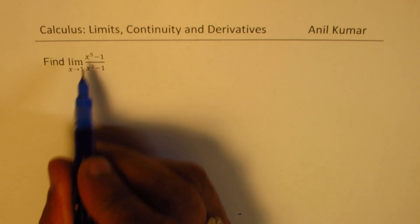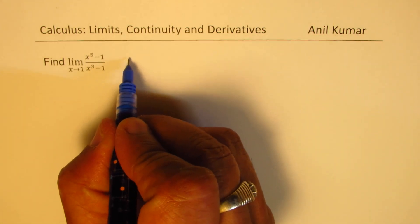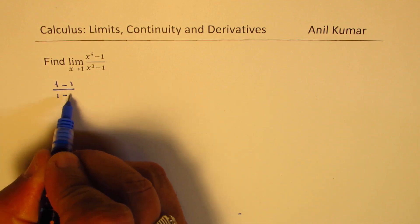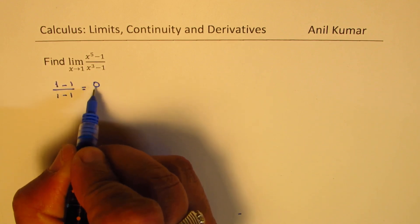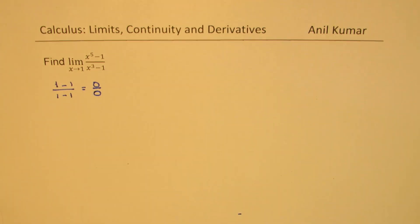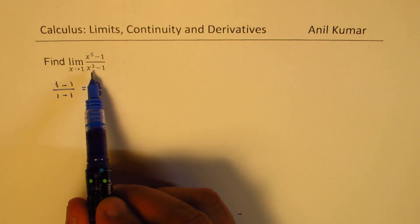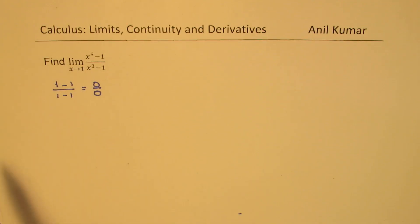Now if I substitute 1 here, I get 1 minus 1 over 1 minus 1, which is of the form 0 over 0. So when you get that form, it is an indeterminate, and it clearly signifies that x minus 1 is a factor of both the numerator and denominator. The idea is to cancel out that common factor and then try the limit. That's the whole concept.